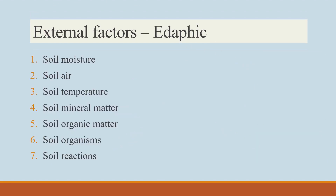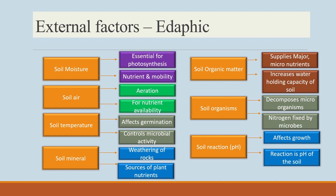The external edaphic factors include soil moisture, soil air, soil temperature, soil mineral matter, soil organic matter, soil organisms, and soil reactions. Soil moisture is essential for photosynthesis and is the principal constituent of growing plants. Nutrient availability and mobility increase with increasing soil moisture. Soil air provides aeration for water absorption by roots and nutrient availability. Soil temperature affects germination, physical and chemical processes in the soil, and controls microbial activity.